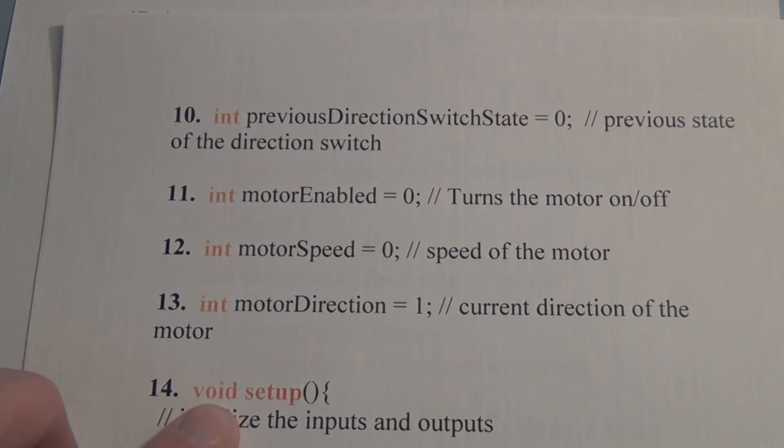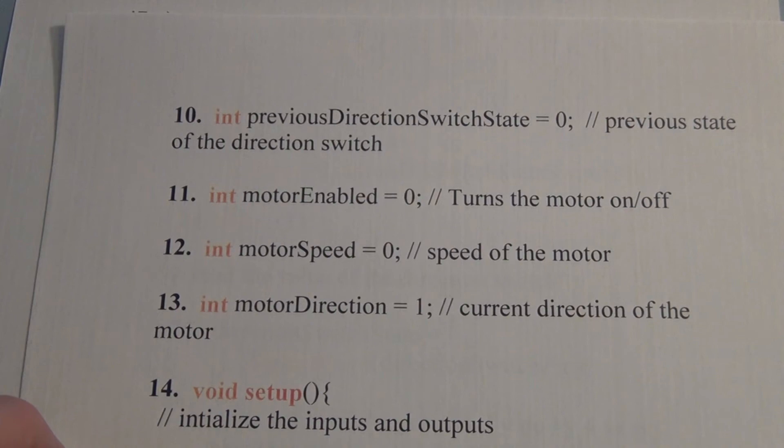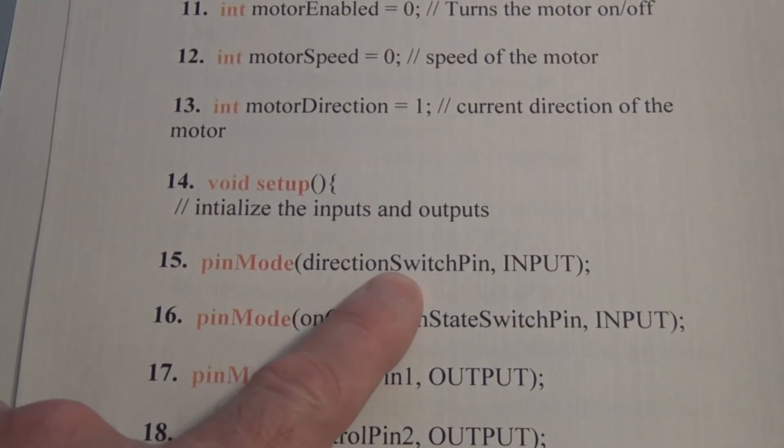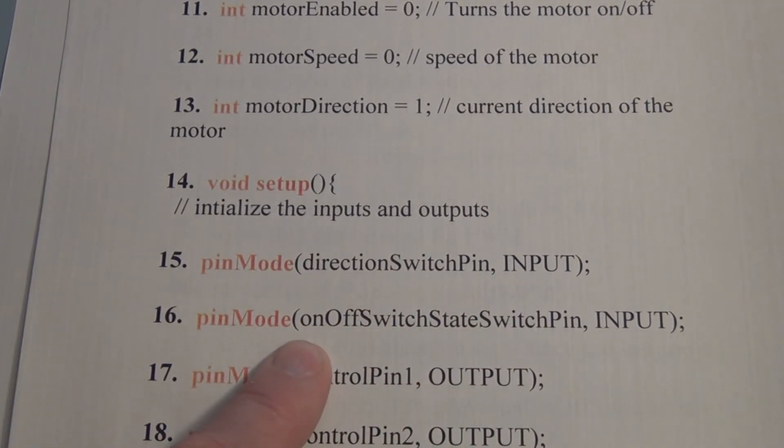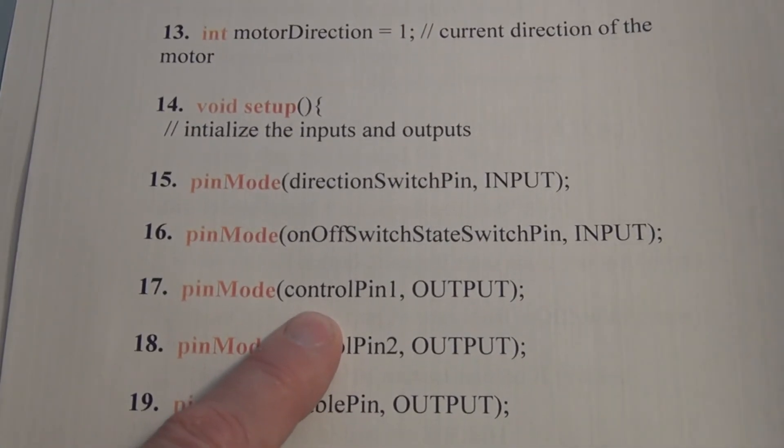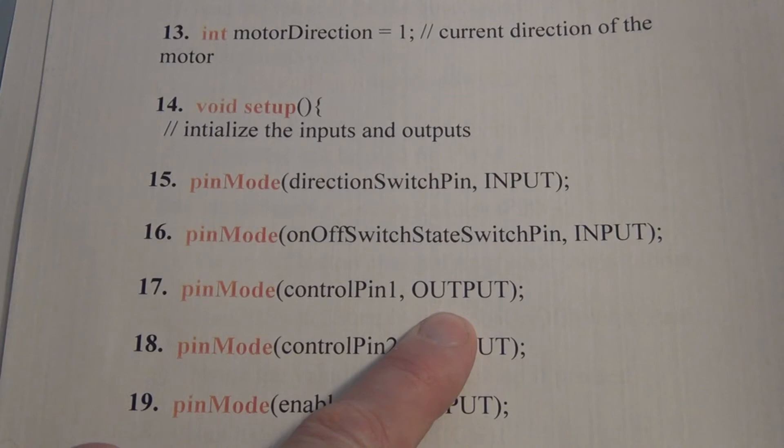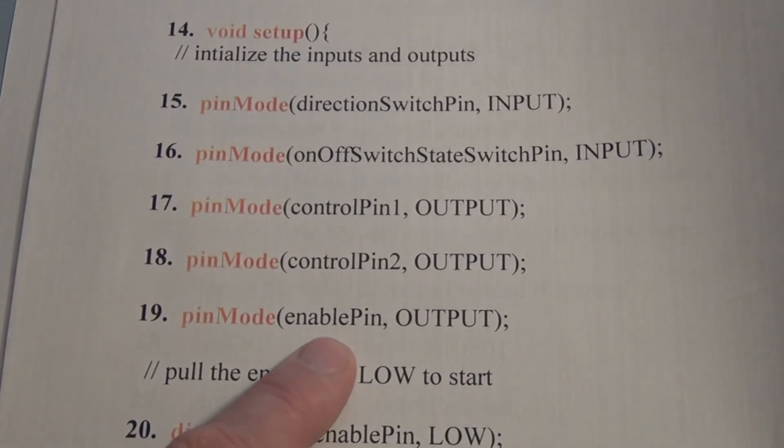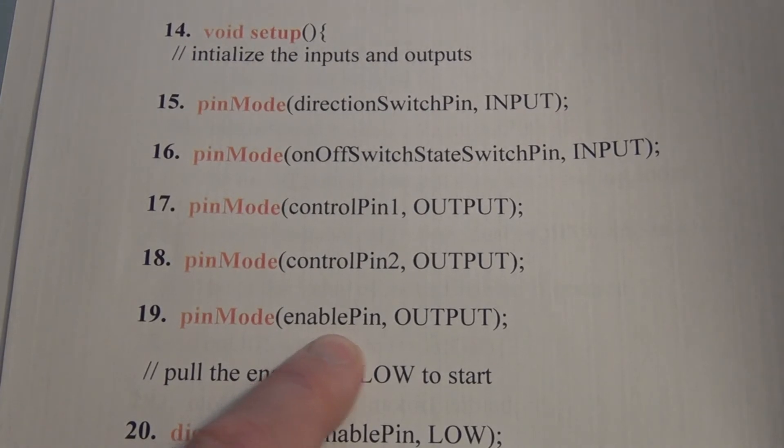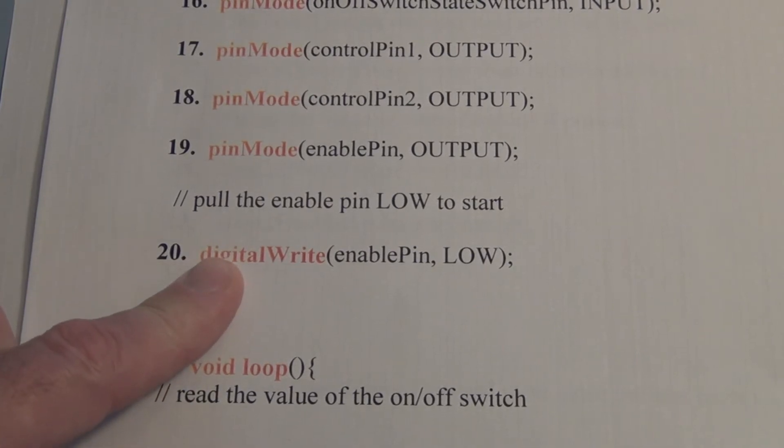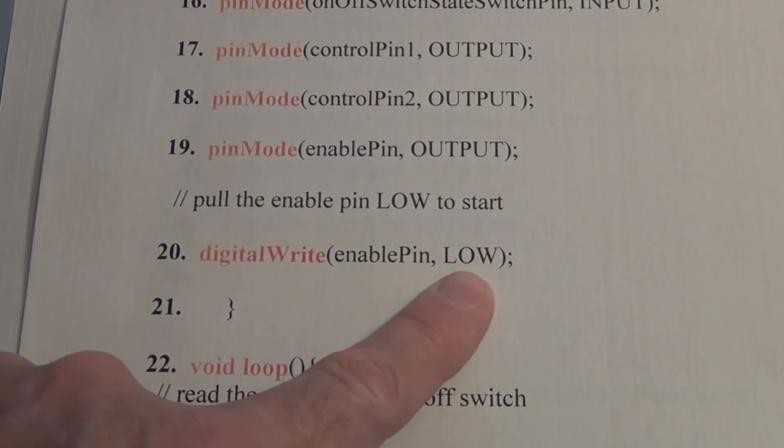Next we're calling the setup function and we're going to initialize our input and outputs. So we're using pin mode and switch, direction switch pin is an input, on off switch state switch pin is an input, control pin 1 going to the H bridge, that's an output, control pin 2 going to the H bridge is an output and the enable pin going to the H bridge is an output. Next we're starting off by making the enable pin low, so the motor does not turn on, so we digital write enable pin low.